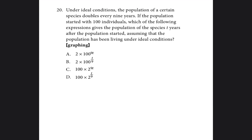Before I start the last problem, I want to give you a heads up — this problem was difficult for me when I was reading and working through it. I'm going to do my best to explain it. I'm not a perfect tutor but I sincerely want to help you. So problem 20 says: under ideal conditions, the population of a certain species doubles every 9 years. If the population started with 100 individuals, which expression gives the population t years after it started?